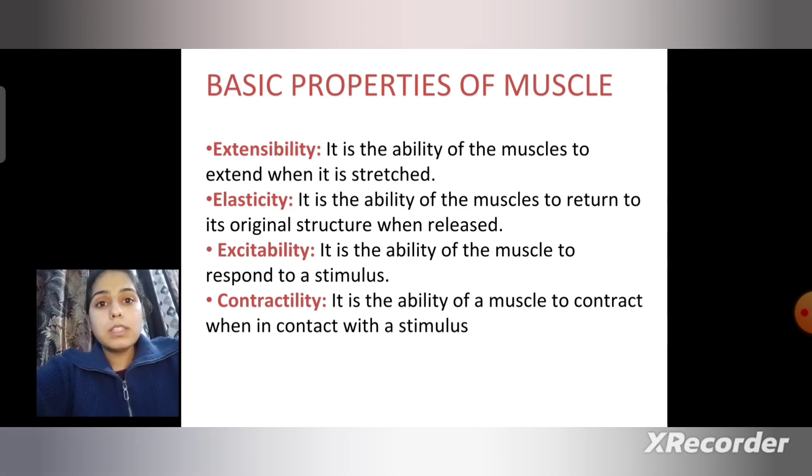Extensibility is the ability of muscles to extend when stretched. Elasticity is the ability of muscles to return to their original structure when released. Excitability is the ability of muscles to respond to a stimulus, and contractility is the ability of muscles to contract when in contact with a stimulus.